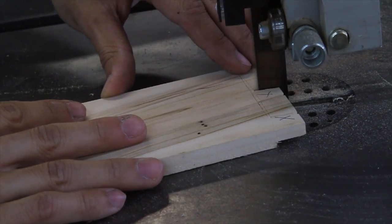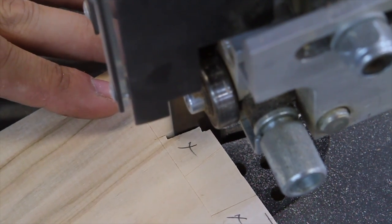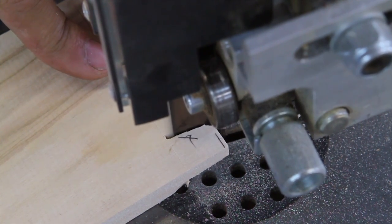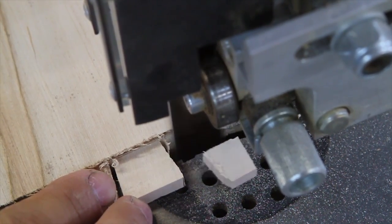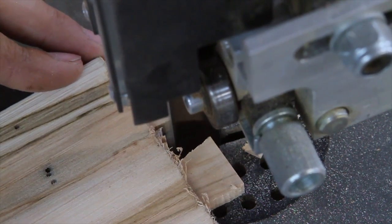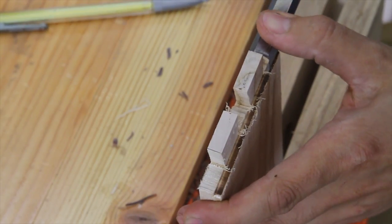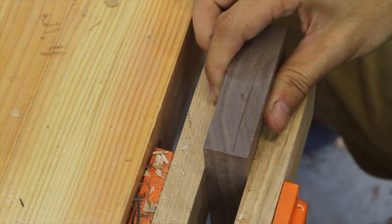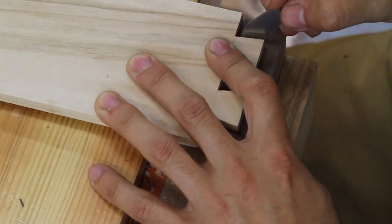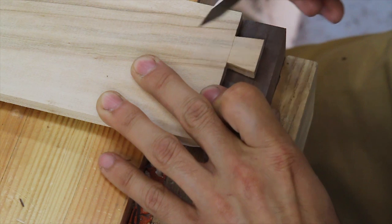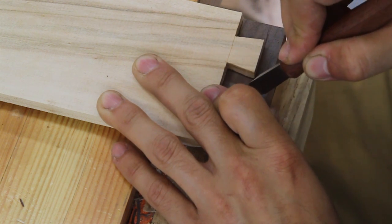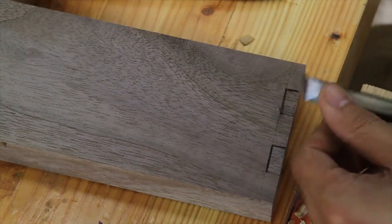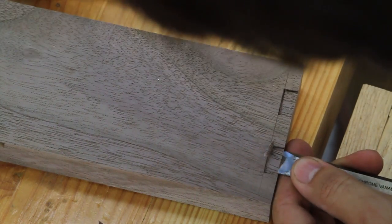I used the bandsaw to freehand cut the tails and removed the majority of the waste. Now transferring the tails is pretty easy. The rabbet on the side sets the alignment in and out so all has to be adjusted is the up and down alignment. Once the alignment is set, the tails can be traced with a knife and the knife line can be extended down the inside face of the drawer front. I chopped and pared away the waste with a chisel and then cleaned up the remaining material working in from the end.